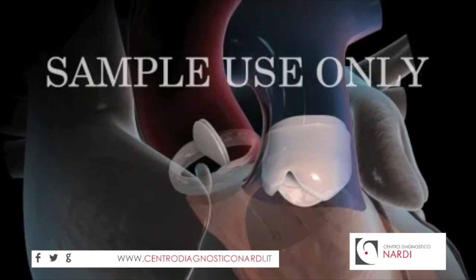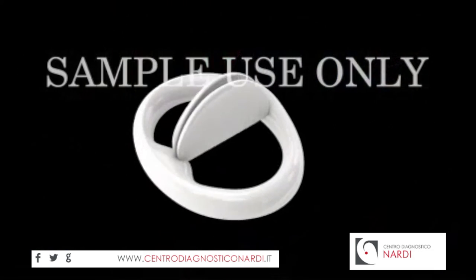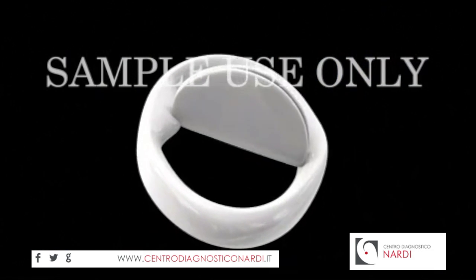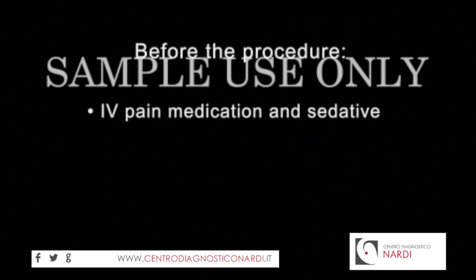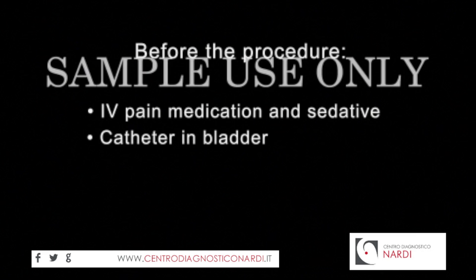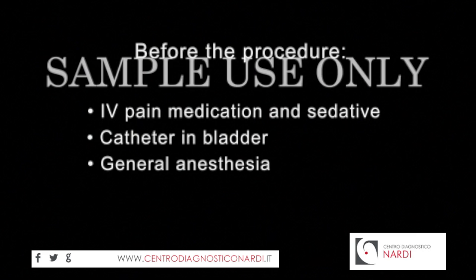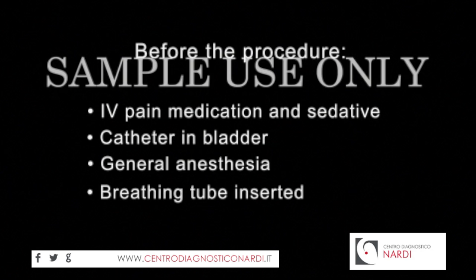An aortic valve replacement is performed to restore the valve to normal function. Before your procedure, an IV line will be started in your arm to provide fluids and medications. A catheter will be inserted into your bladder to drain urine. Aortic valve replacements are done under general anesthesia, meaning you will be asleep for the duration of the operation, and a tube will be placed through your mouth and into your windpipe to help you breathe during surgery.